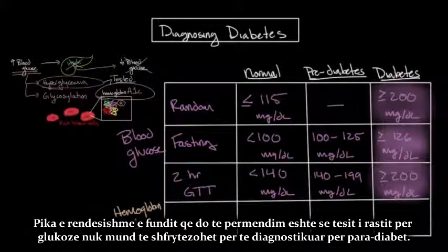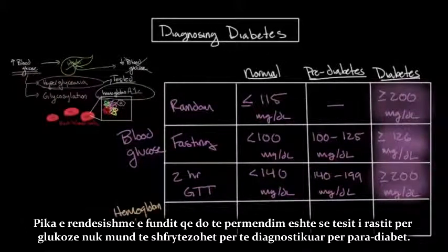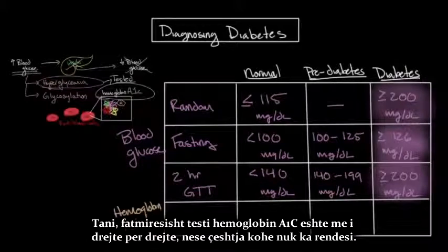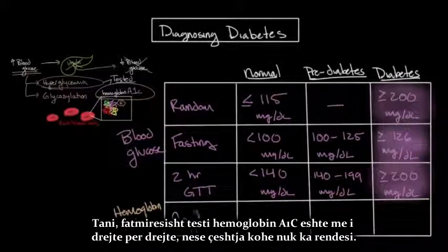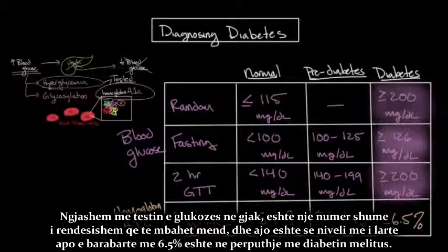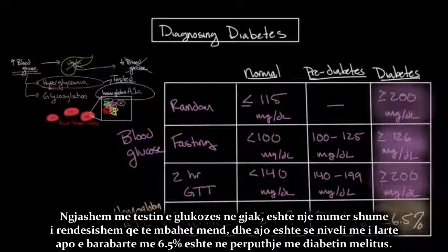Hemoglobin A1c testing is more straightforward, as the timing of the test does not matter. Similarly to the blood glucose test, there is one important number to remember: a level greater than or equal to 6.5% is consistent with diabetes mellitus.